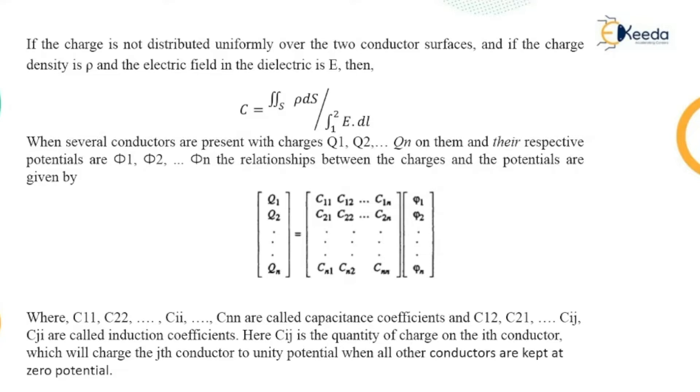The charge is not distributed uniformly over the two conductor surfaces. If the charge density is ρ and the electric field in the dielectric is E, then we have C = ∬ρ ds / ∫₁² E dl.